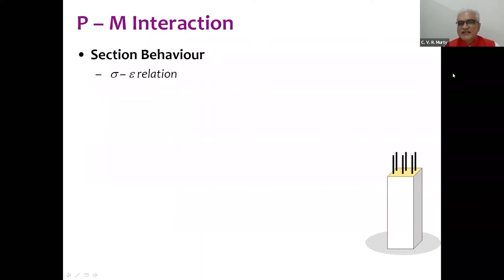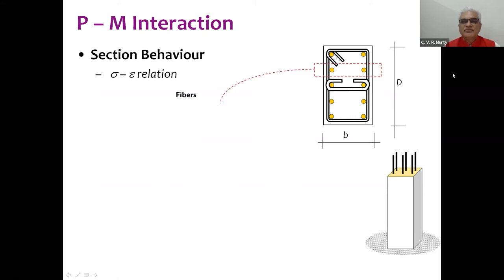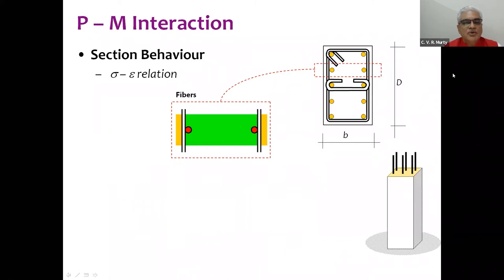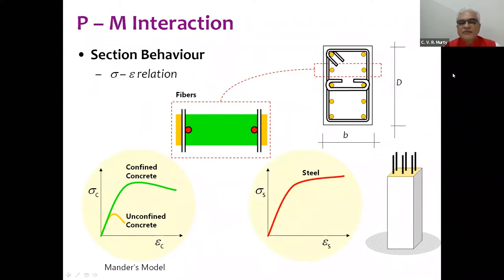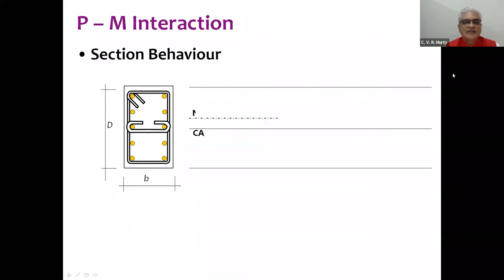We take the cross section and divide it into fibers — each fiber has core confined concrete in green, cover unconfined concrete in orange, and steel fibers. For confined concrete we have a stress-strain curve, and for unconfined concrete another, using models from literature — some are more suited to bridge columns versus building columns. We obtain the normal strain in concrete and the corresponding normal stress, then the normal strain in steel and the corresponding normal stress in steel.